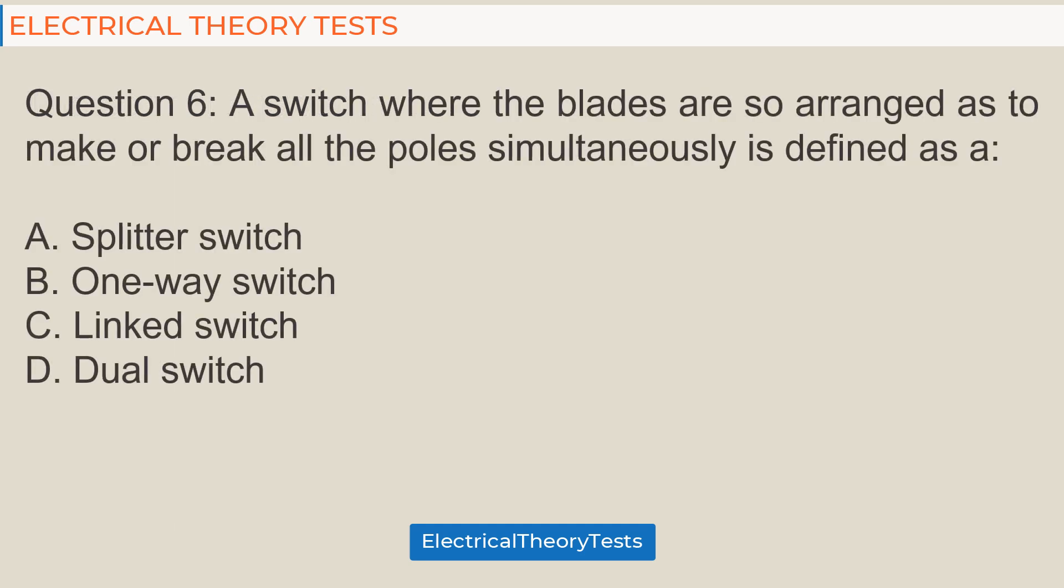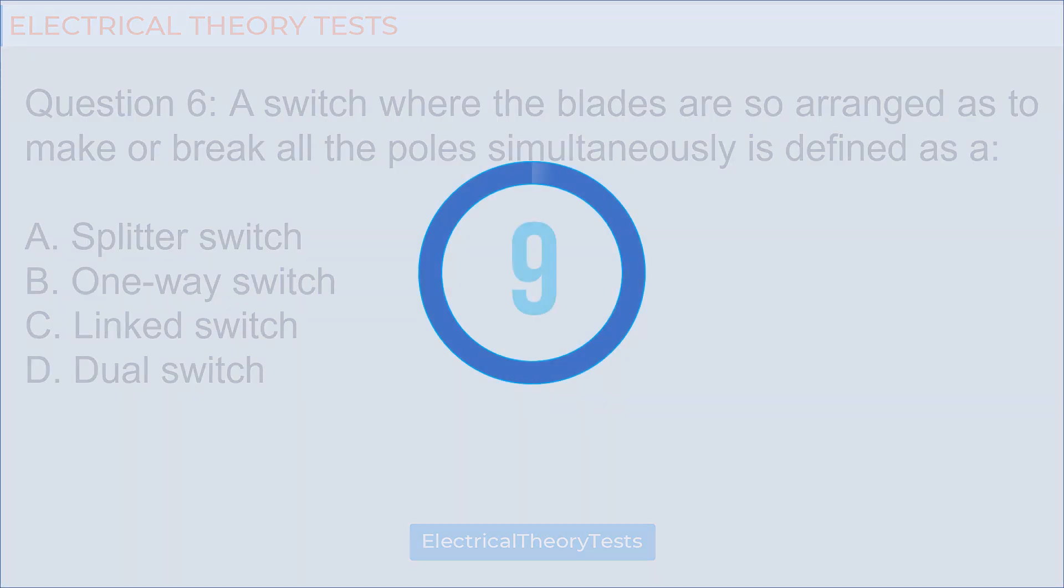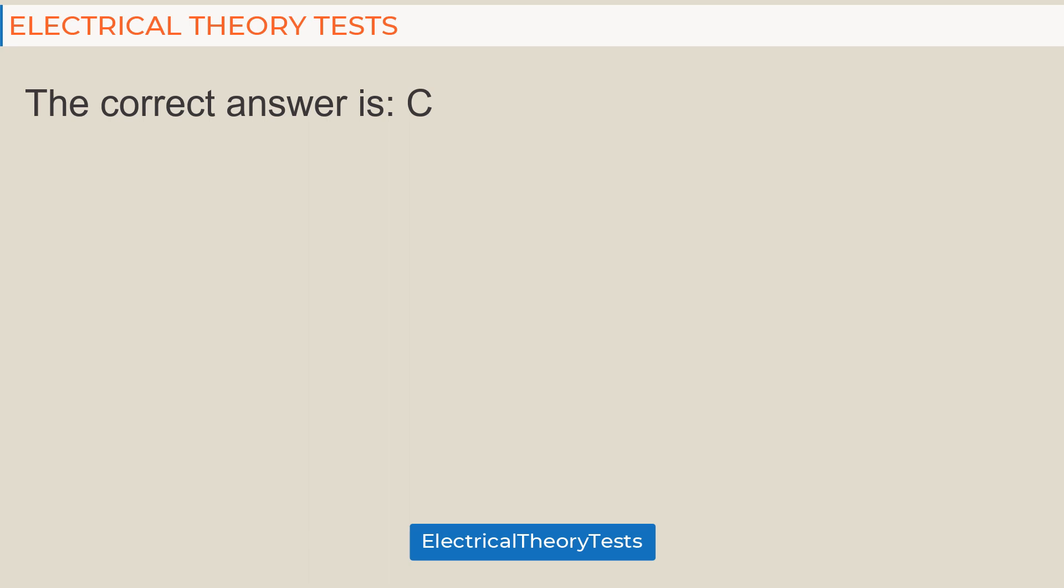Question 6: A switch where the blades are so arranged as to make or break all the poles simultaneously is defined as a: A. splitter switch, B. one-way switch, C. linked switch, D. dual switch. The correct answer is C.